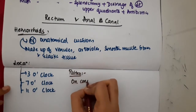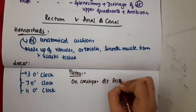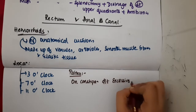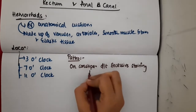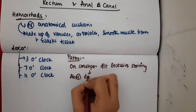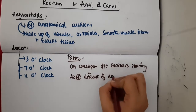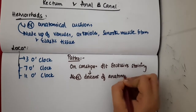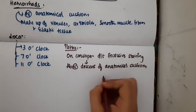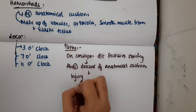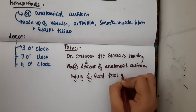Regarding pathophysiology: whenever the patient has constipation, the patient tries to excessively strain for passing stools. This excessive straining results in abnormal descent of the anatomical cushions, which then leads to injury by hard fecal matter.